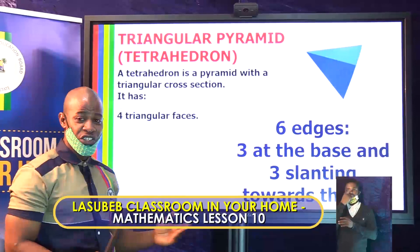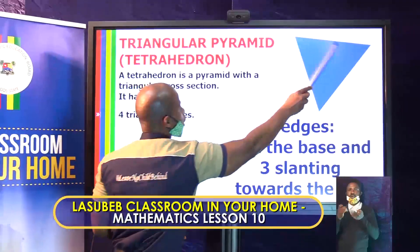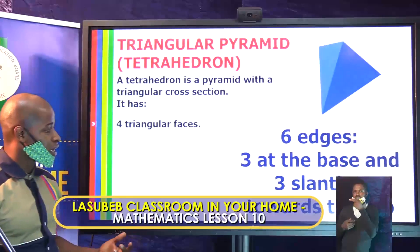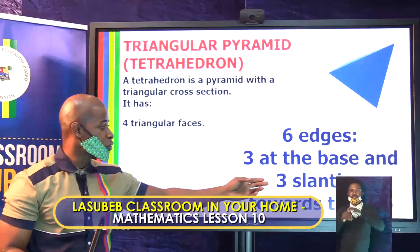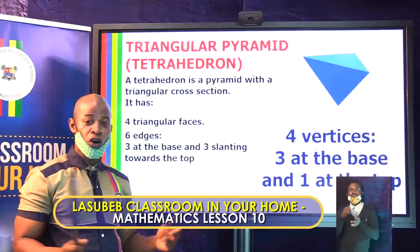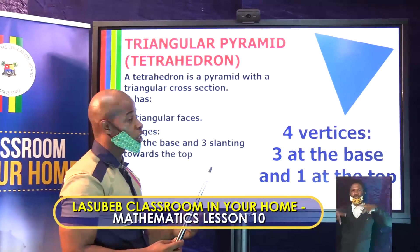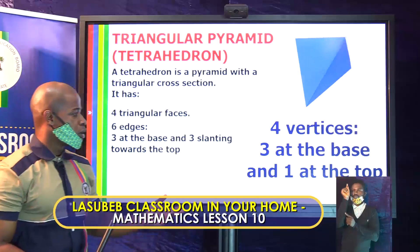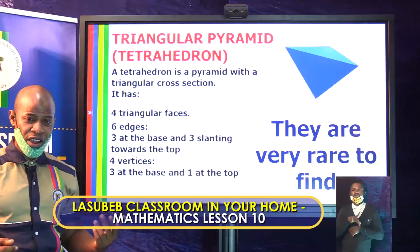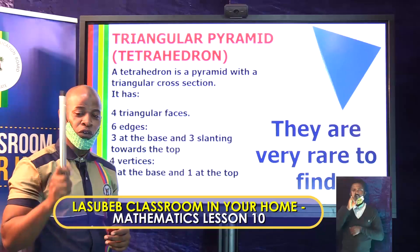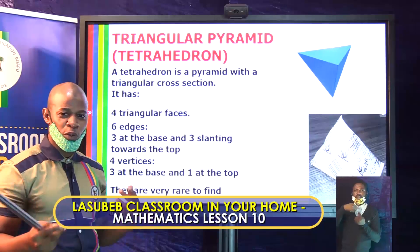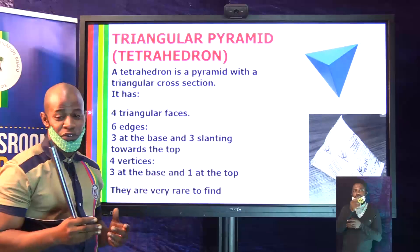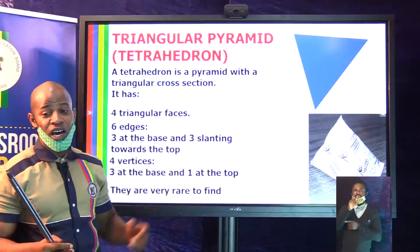It has six edges — the straight lines. Three at the base and three slanting towards the top. It has four vertices, which are the sharp corners. Now, tetrahedrons are very rare, but one example you may know is the fan yugo carton that vendors sell from bicycles. When you examine that carton, it is a tetrahedron — a triangular pyramid.